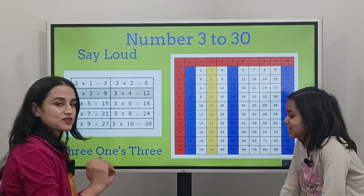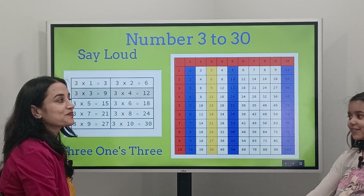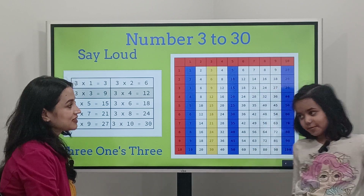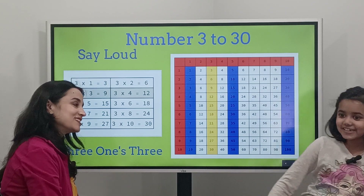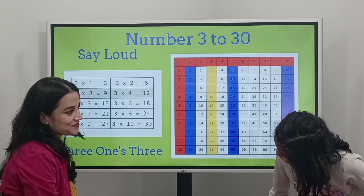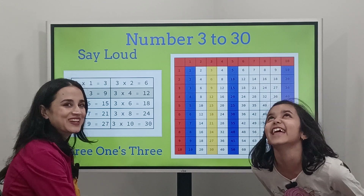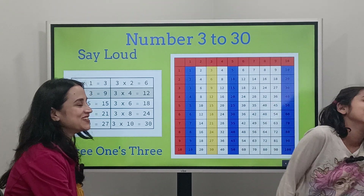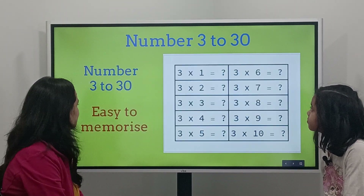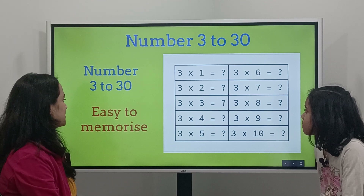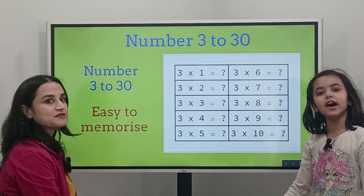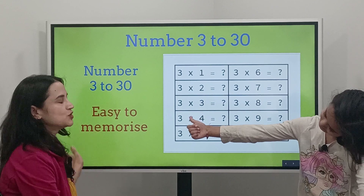Are you ready Lena? Three ones — three. Three twos — six. Three threes — nine. Three fours — twelve. Three fives — fifteen. Three sixes — eighteen. Three sevens — twenty-one. Three eights — twenty-four. Three nines — twenty-seven. Three tens — thirty.